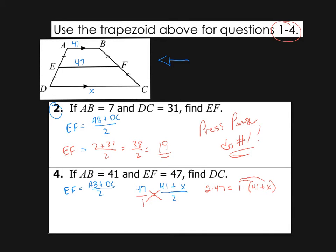Now, even though I'm distributing one, nothing's going to change. So that's 41 plus X. And two times 47 is going to be 94. Now, all I need to do is subtract 41 from both sides, and I get the value of X. It's going to be 53. And keep in mind that the length of DC was what we called X. So if X is 53, then DC is worth 53 or 53 units.